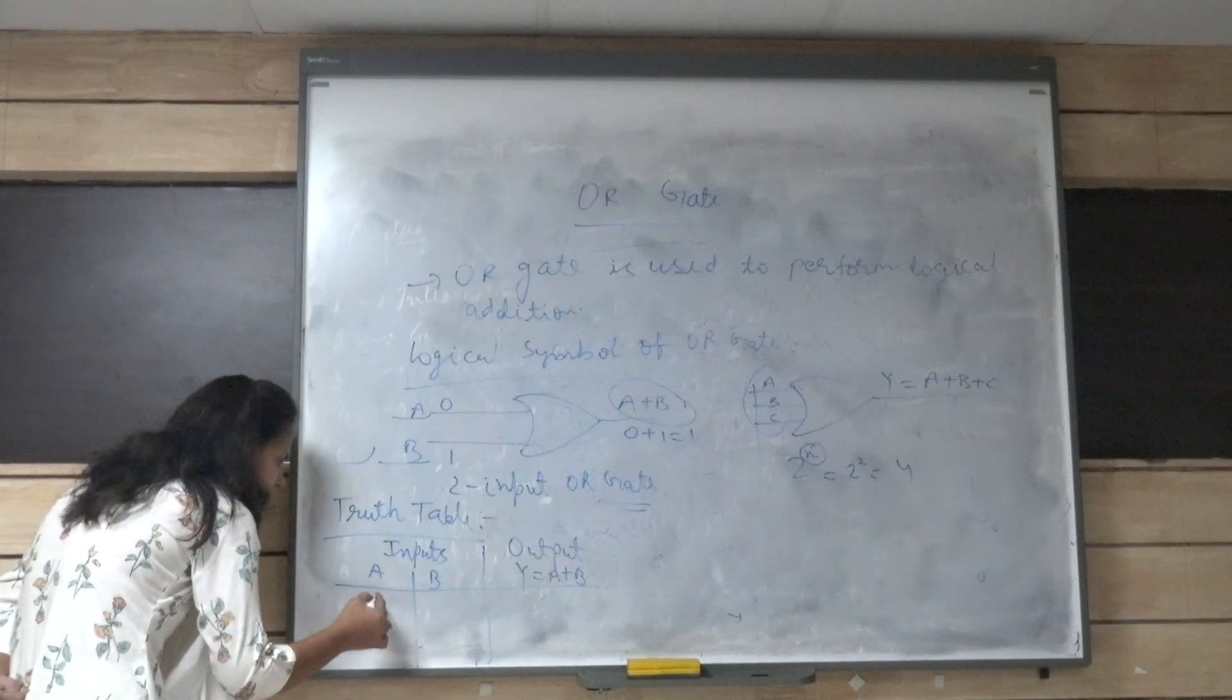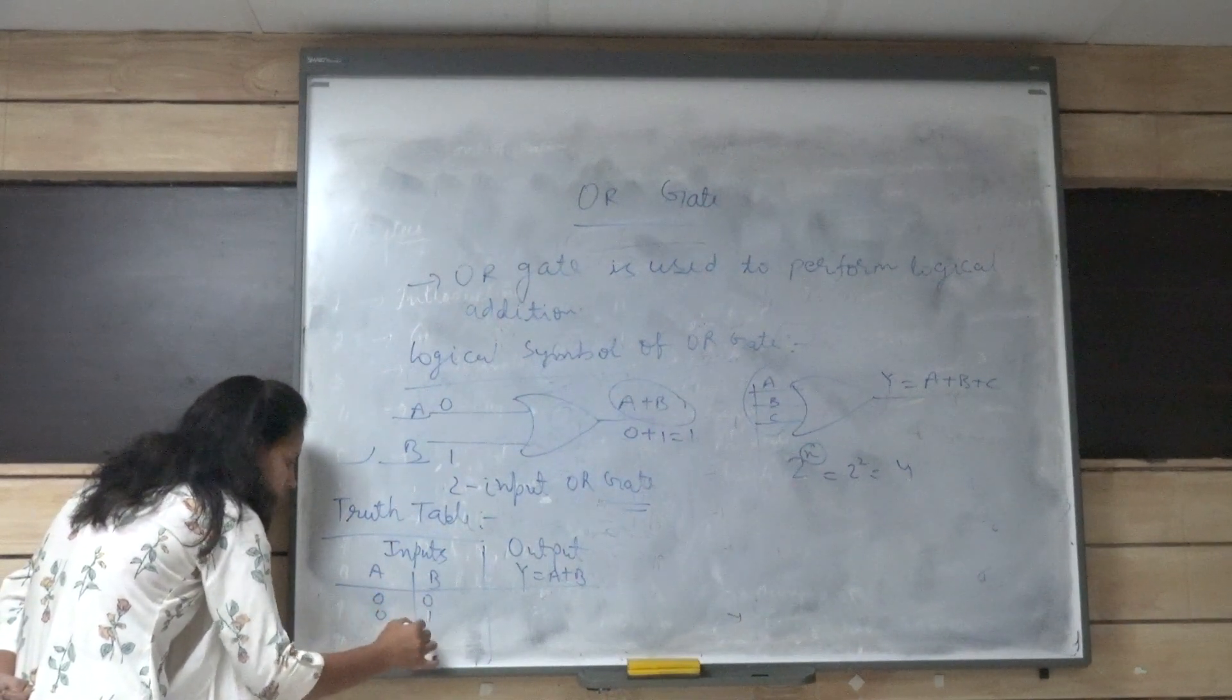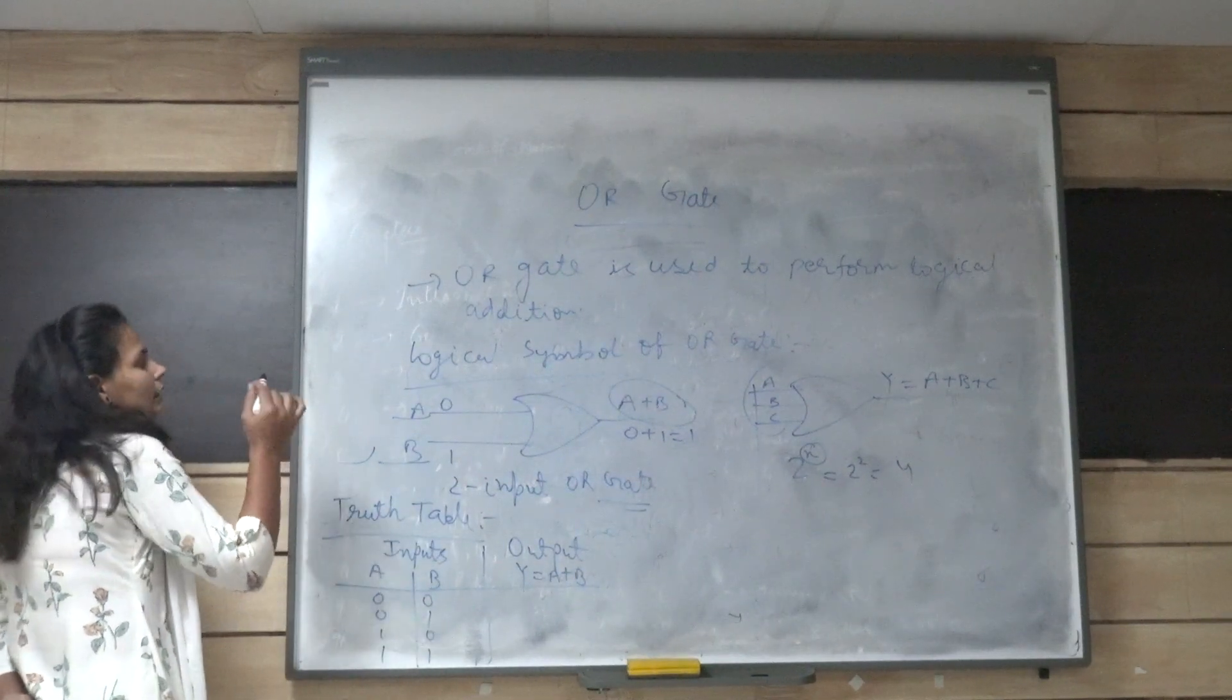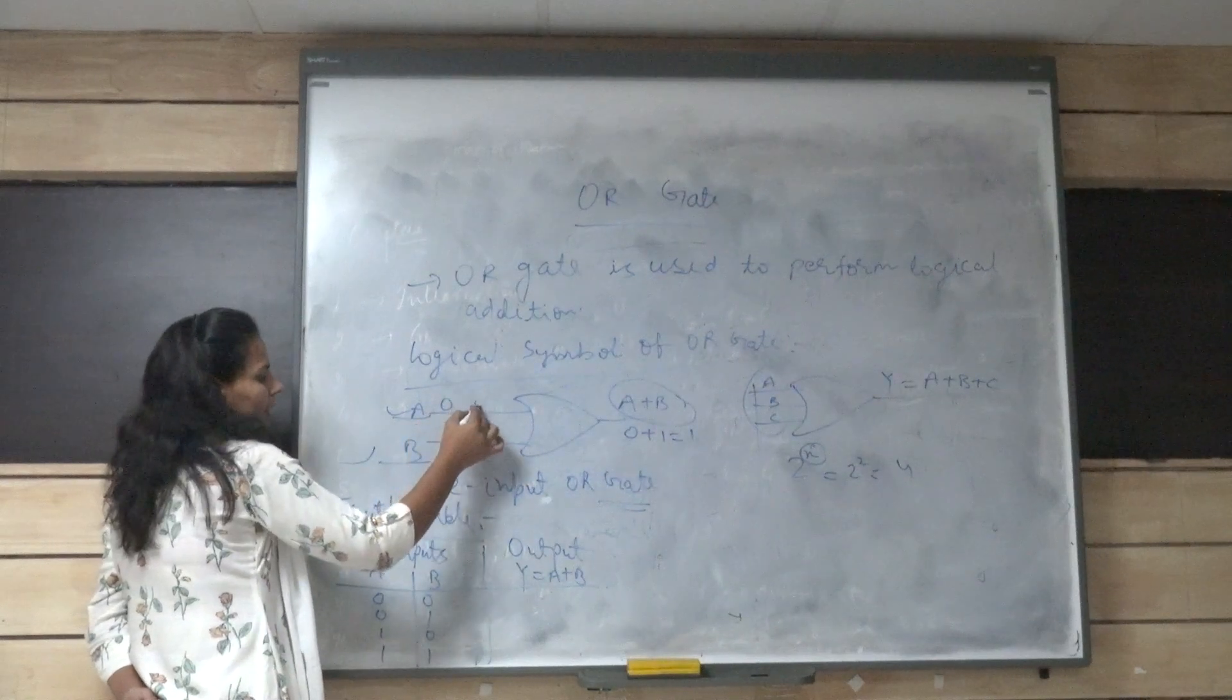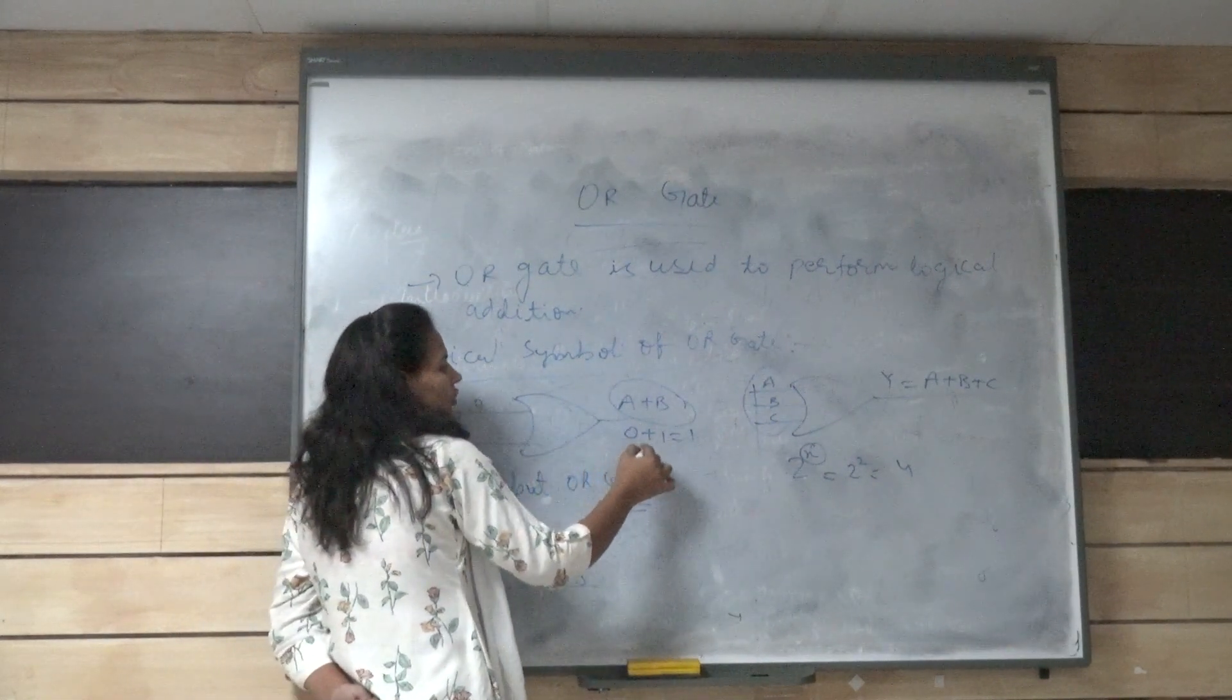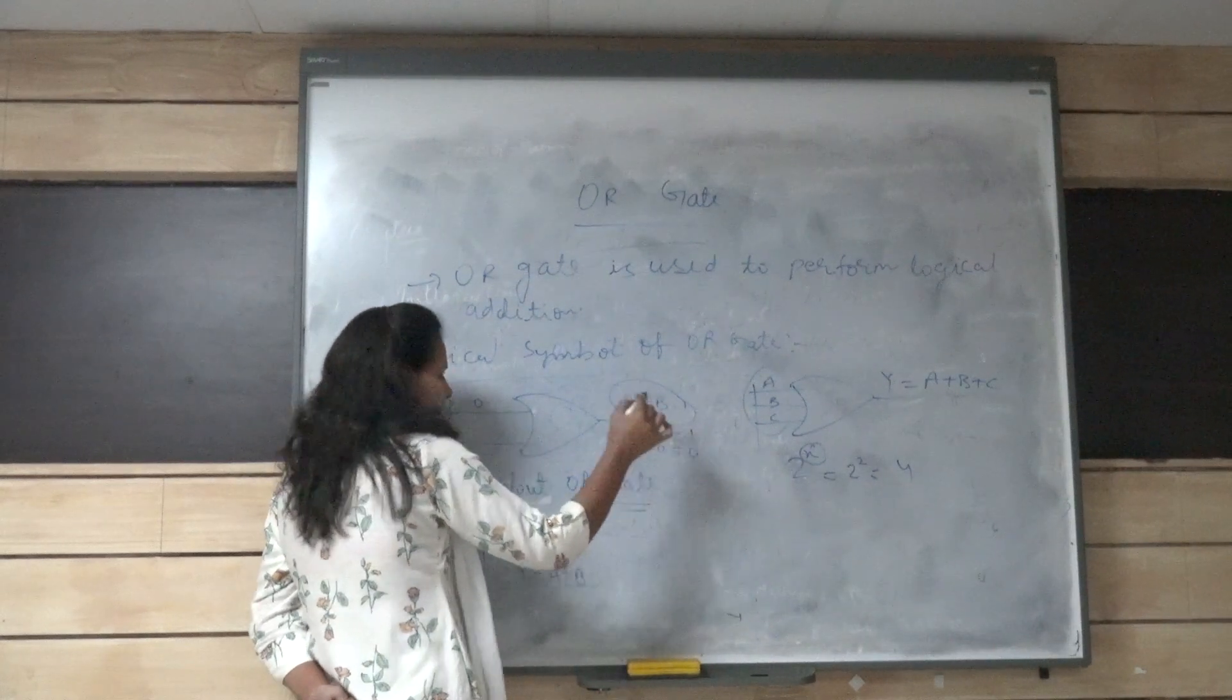So these combinations will be 0 0, 0 1, 1 0, 1 1. Suppose when A is 0 and B is 0, then the output of OR gate will be 0 plus 0 will be 0.